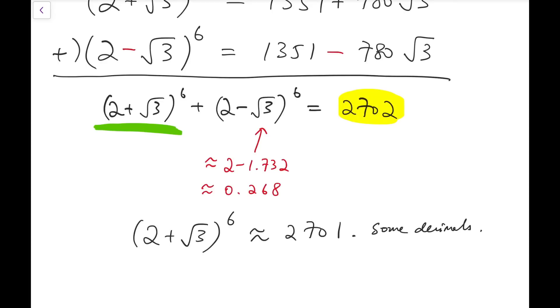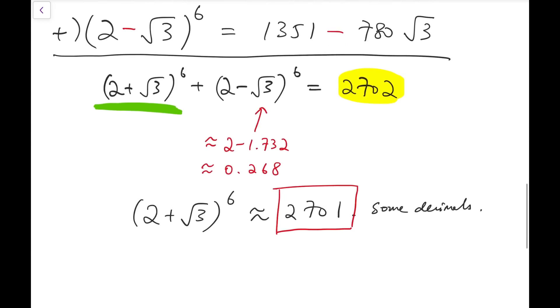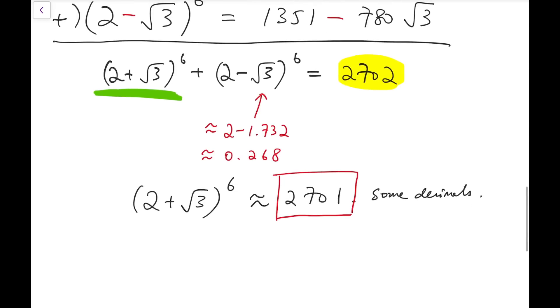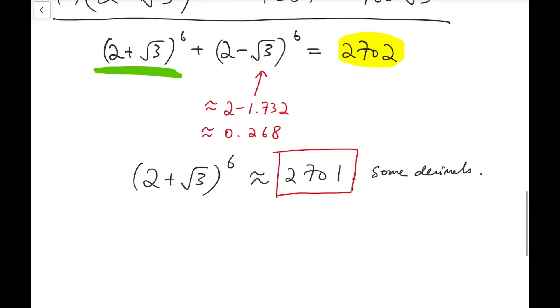And this tells us our final answer is exactly this number, 2701. And this is the integral part. So for those of you who have been using a calculator, you might have already noticed that by using that, you will get 2701 point 99963 and so on. And so that will match our calculations. And this is our final answer. Thank you.